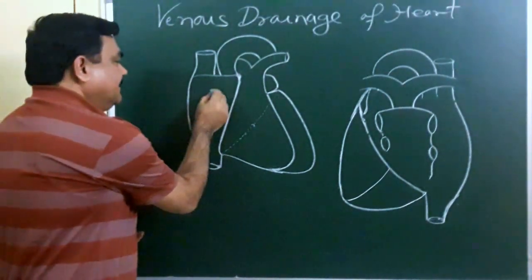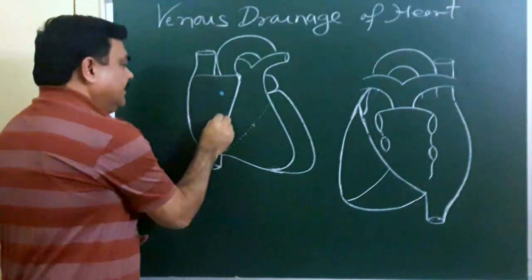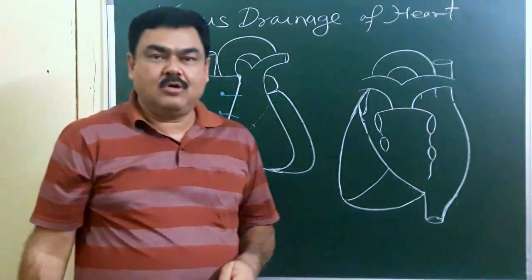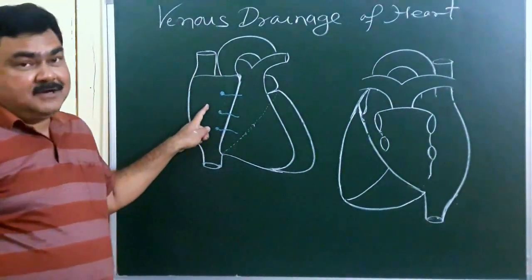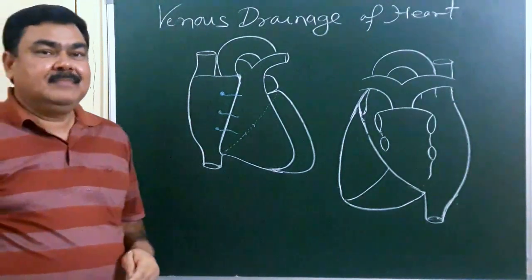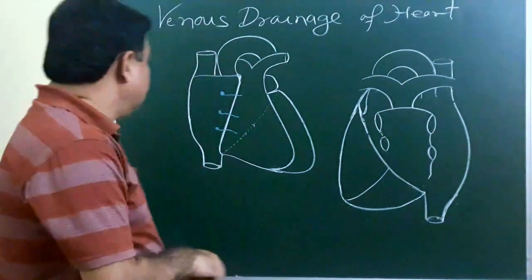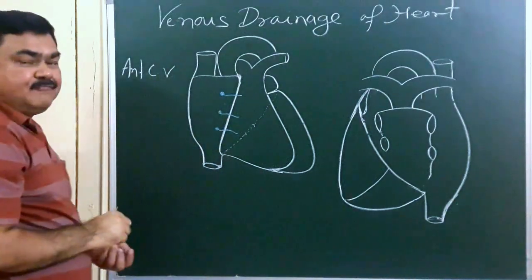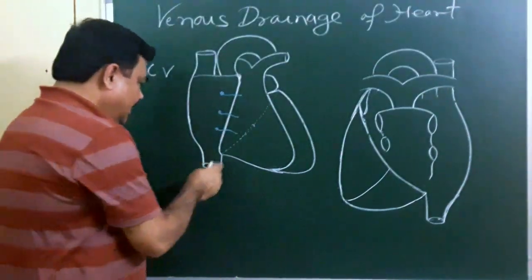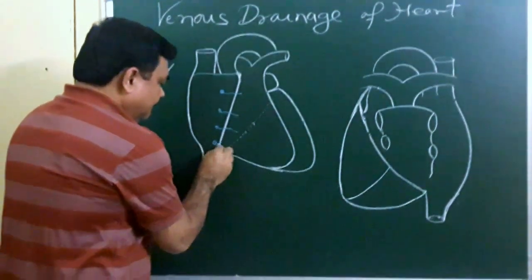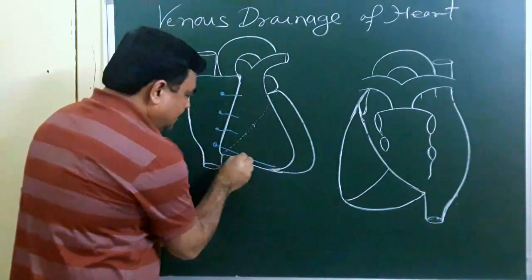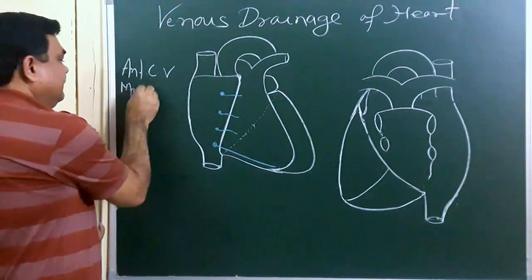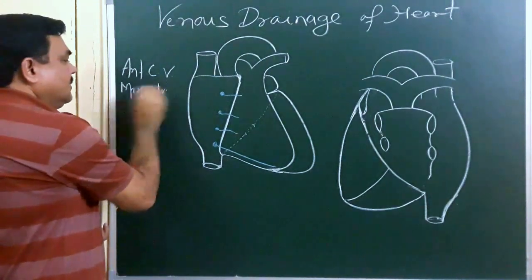Here, on the surface, you can see there are three to four veins present over the right atrium. These veins are the anterior cardiac veins. These three or four veins are present here. Here is the anterior interventricular groove and here is the marginal groove.